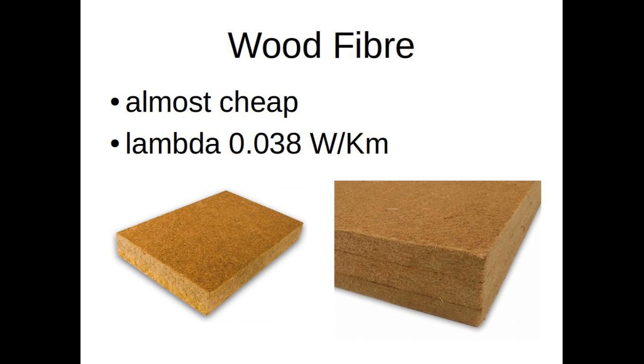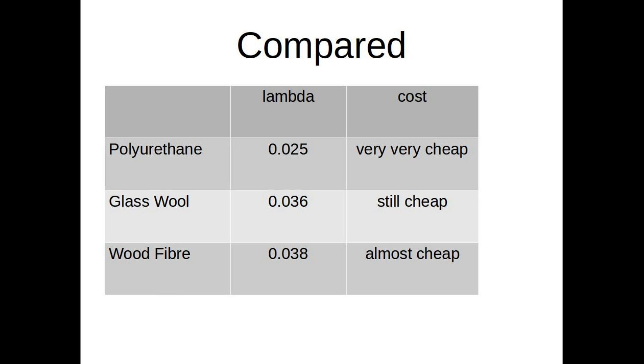So those are the three materials that we are going to compare. Here is the overview: polyurethane, really cheap and excellent insulation properties on paper. Glass fiber or glass wool, still very good insulation properties, also not very expensive.